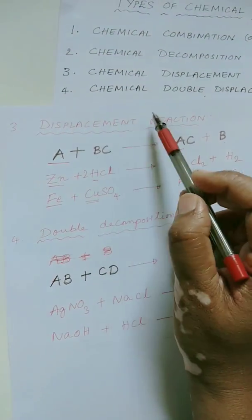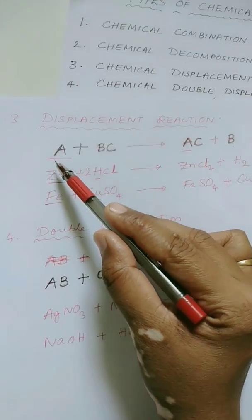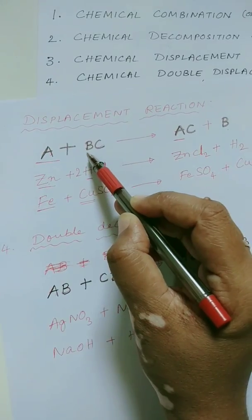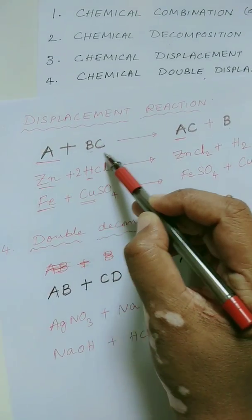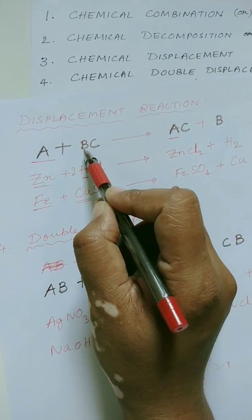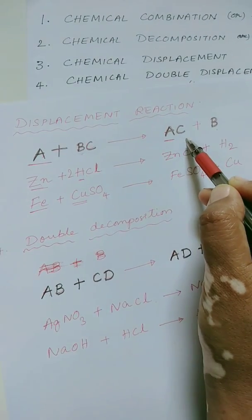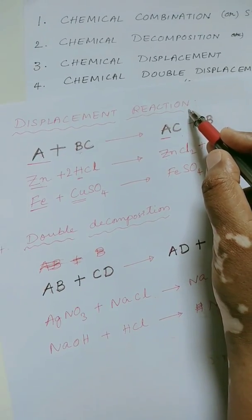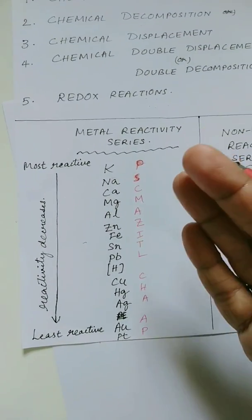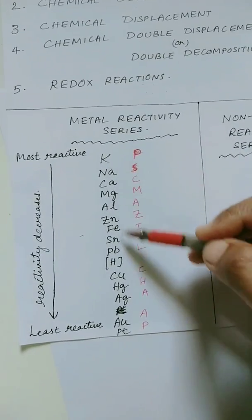Another interesting type of chemical reaction is the chemical displacement reaction. Please do listen to this very carefully. A more reactive element displaces a lesser reactive element from its compound and occupies its place, forming a new compound. In order to understand displacement reactions well, you have to have an idea of the metal reactivity series — to know which element is more reactive and which one is lesser reactive.